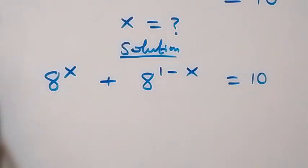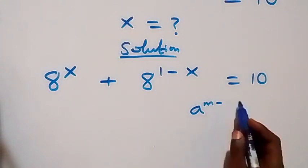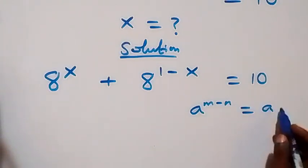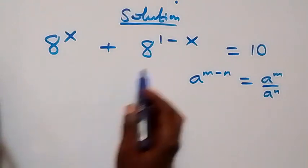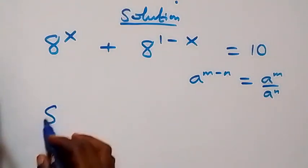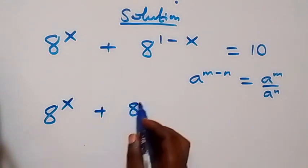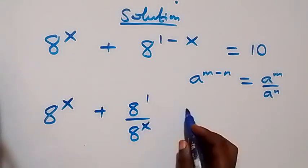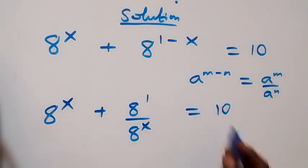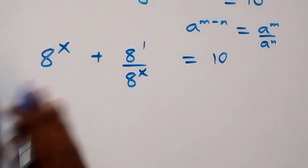Here we apply the law of indices: a raised to power m minus n is the same as a raised to power m divided by a raised to power n. So we can write 8 raised to power x plus 8 raised to power 1, then over 8 raised to power x, equals 10.